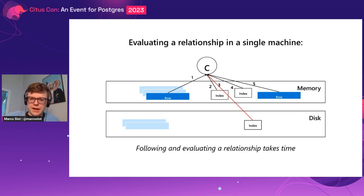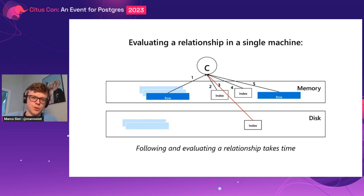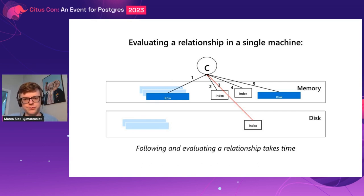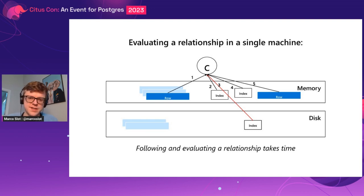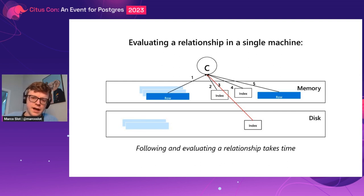This could look like doing a join between rows in one table and another table. You're walking through rows on one side and for every row on the left you do an index walk to find the row on the right. Every index page requires memory access, sometimes disk access. Memory is very fast — around 100 nanoseconds or microseconds. Disk can be a lot slower because of network. But overall, this is still a pretty quick operation.